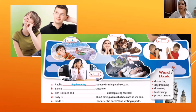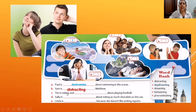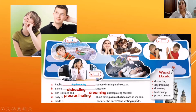Students use context clues to determine: who is the subject — a boy or a girl? If it's a boy, some options are discarded. For example, someone is distracting Matthew because there are two boys. Someone else is thinking about playing football, so the correct word for that blank is 'dreaming.' For Sally, since there are only two girls, students can infer. Sally is dreaming about eating as much chocolate as she can. And Linda — the last option — is 'fantasizing' because she doesn't like writing reports.